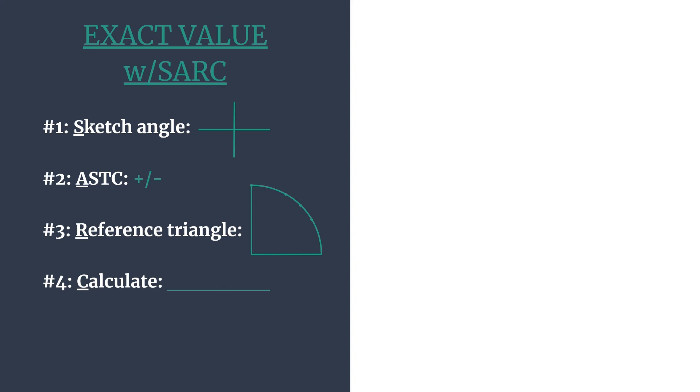You can see it's broken down here. S stands for sketch the angle. A, ASTC, which helps you decide if your answer is positive or negative. R, reference triangle and coordinates. And C, calculate the trig ratio.